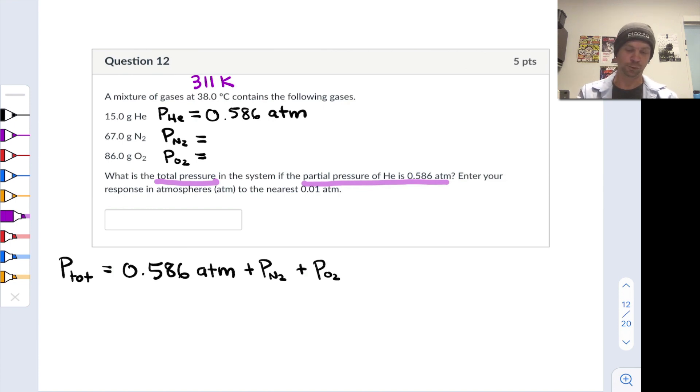All the gases are at 38 degrees C, this constant temperature, and they're all occupying the same volume. So we can think of this as a constant temperature, constant volume situation where the gases differ only in their partial pressures.